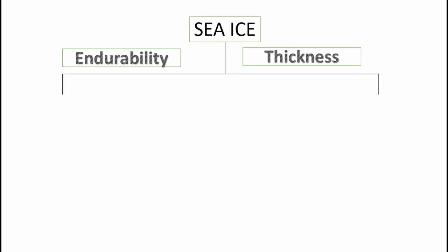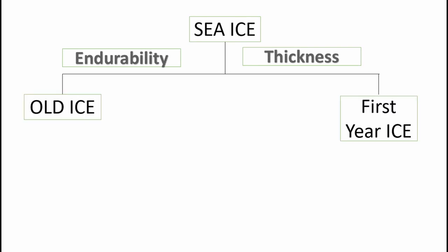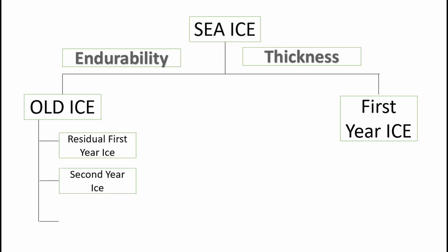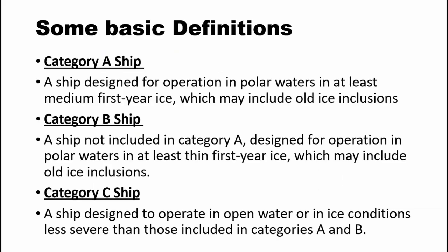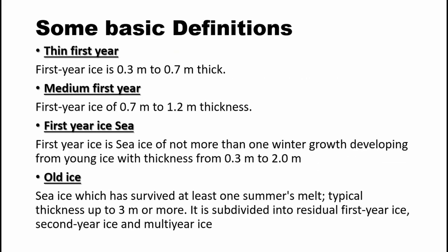The ice present in polar regions is also subdivided into four different categories depending on the time of their presence and their thickness. Those categories are: first year sea ice, thin first year ice, medium first year ice, and old ice. First year sea ice is sea ice which has undergone not more than one winter's growth and has been developed from young ice, with thickness being from 0.3 meters to 2 meters.